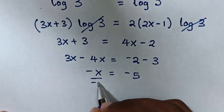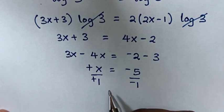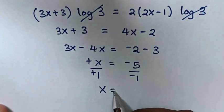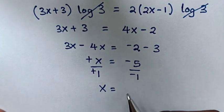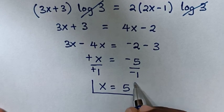In the next step, we divide by negative 1 in both sides. So this will be positive, positive. It will be x is equal to negative 5 divided by negative 1 is 5. So this is our final answer.